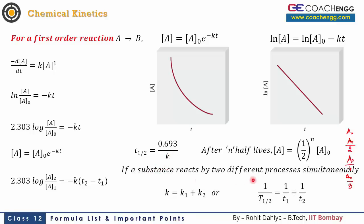If a substance breaks down simultaneously through two different processes, the rate constants add up: total rate constant = k1 + k2. Consequently, 1/T½(combined) = 1/T½(reaction 1) + 1/T½(reaction 2). This topic is also discussed in detail in Physics, since all radioactive decay processes are first order reactions. Questions on radioactive decay are also commonly asked in JEE Mains chemistry papers.